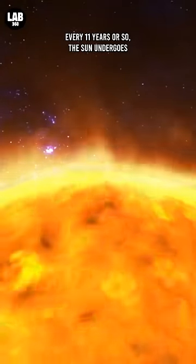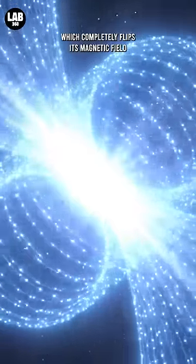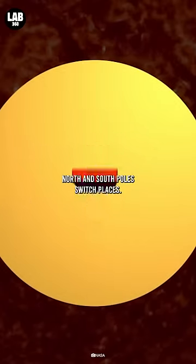Every 11 years or so, the Sun undergoes a solar cycle, which completely flips its magnetic field. Meaning that the Sun's north and south poles switch places.